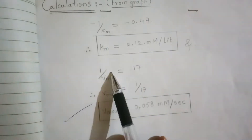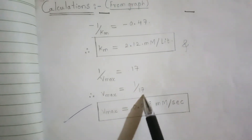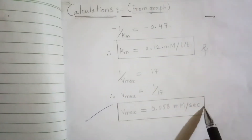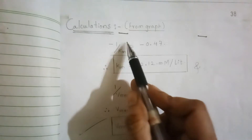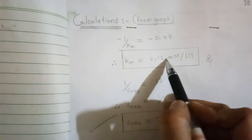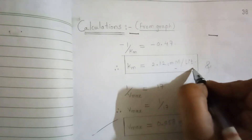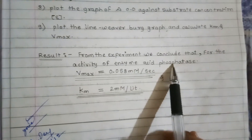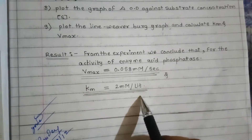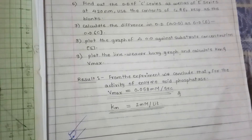From the graph, the y-intercept value of 1/Vmax was found to be 17. Taking its reciprocal: Vmax = 1/17 = 0.058 millimoles per second. The x-intercept gave -1/Km = -0.47, so Km = 1/0.47 = 2 millimoles per liter. It is mandatory to express Km in millimoles per liter and Vmax in millimoles per second with proper units.